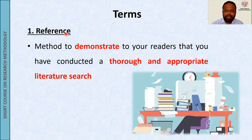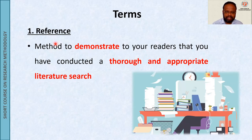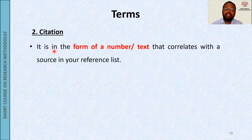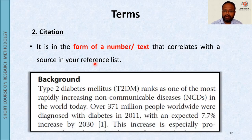Number one is the terms. What does referencing mean? It is the method to demonstrate to your readers that you have conducted a thorough and appropriate literature search - that you have referred to many articles before writing. That is called referencing. What is a citation? A citation is in the form of a number or text that correlates or relates to the source in the reference list. That number or text is called the citation.